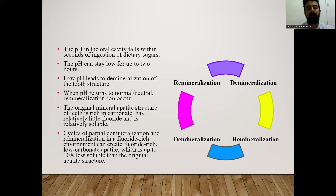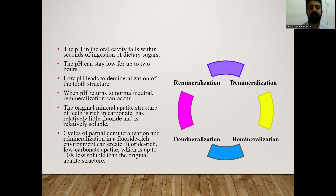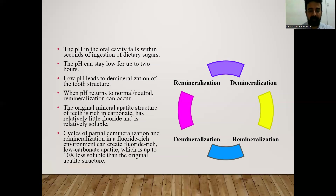The original mineral apatite structure of the teeth is rich in carbonate and relatively low in fluoride, making it relatively soluble. Cycles of partial demineralization and remineralization in a fluoride-rich environment can create a fluoride-rich, low-carbonate apatite that is up to 10 times less soluble than the original crystalline structure.